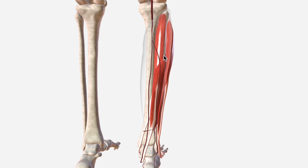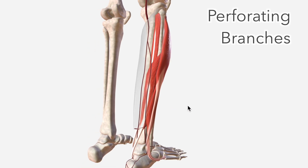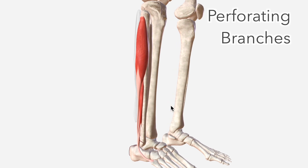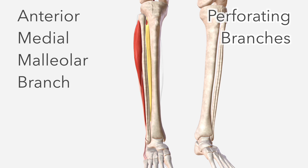We then have what we call the perforating arteries, or the perforating branches. There are up to seven of these along the entire length of the fibular artery, but we only really talk about the largest one, which pierces through the interosseous membrane. Going around to the anterior aspect, the largest perforating branch perforates the interosseous membrane and enters the anterior compartment of the leg, anastomosing with the anterior medial malleolar branch of the anterior tibial artery.